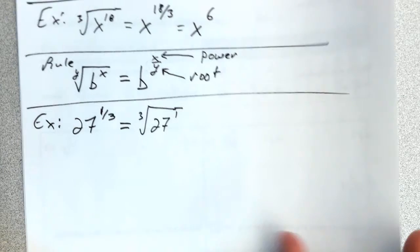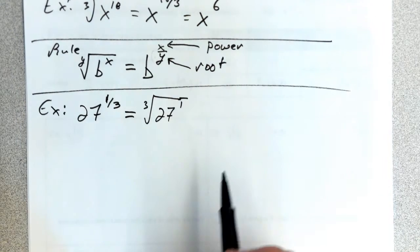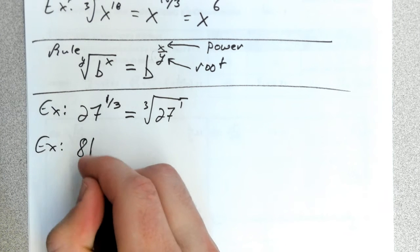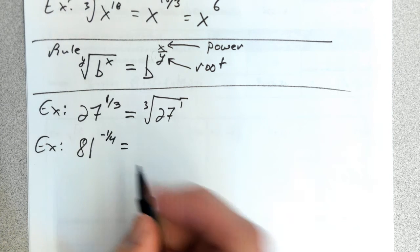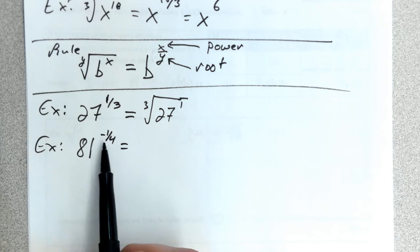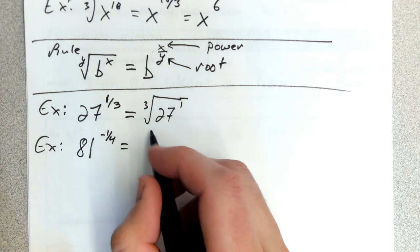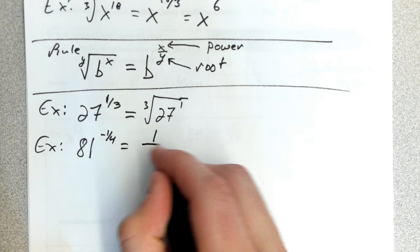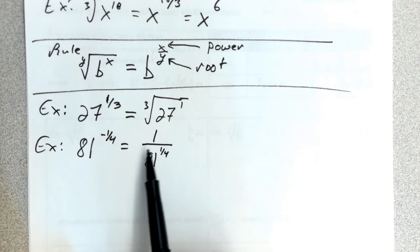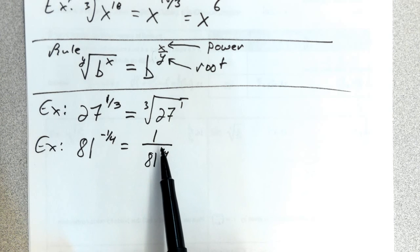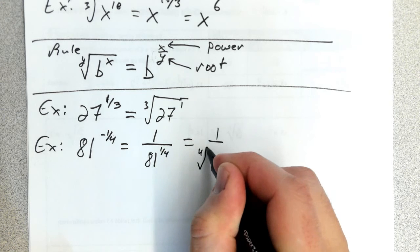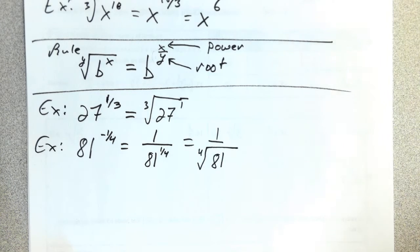Let's look at one with a negative exponent. If you have 81^(-1/4), remember a negative exponent means you put this expression in the denominator with a positive exponent: 1 over 81^(1/4). The same principle holds—power on top, root on bottom—so this is 1 over the 4th root of 81. You don't need to write the 1 in the exponent.